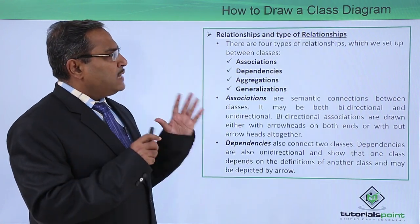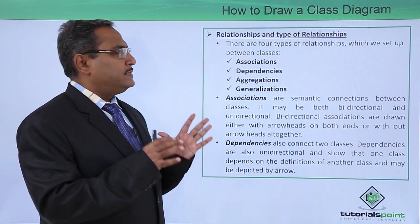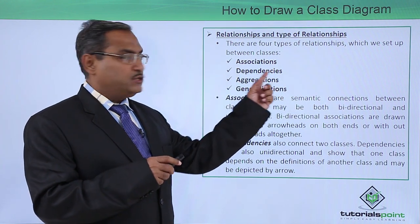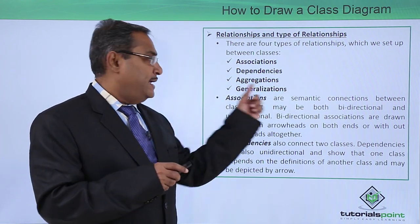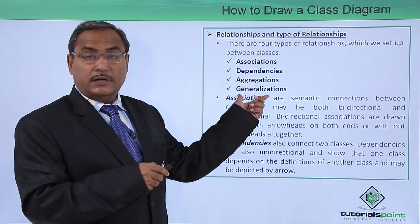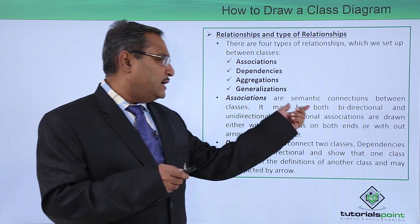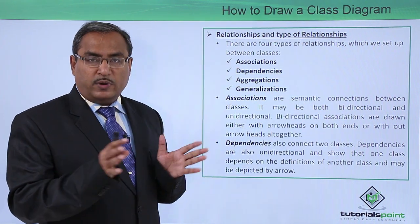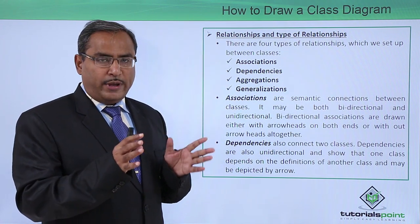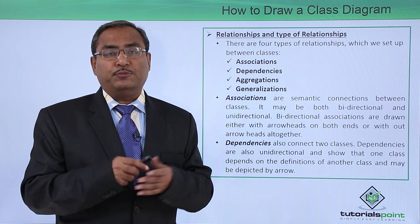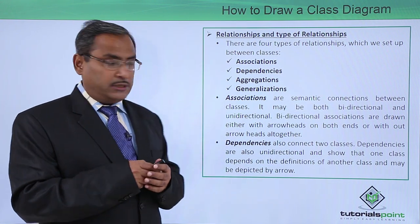So there are four types of relationships which we can set up between classes. First one is associations, next one is dependencies, aggregations and generalizations. You know that this is nothing but the inheritance. So associations are the semantic connections between classes. So between two classes, what is the semantic connection? We can describe that one using association. For this association, you may have to create a separate association class.